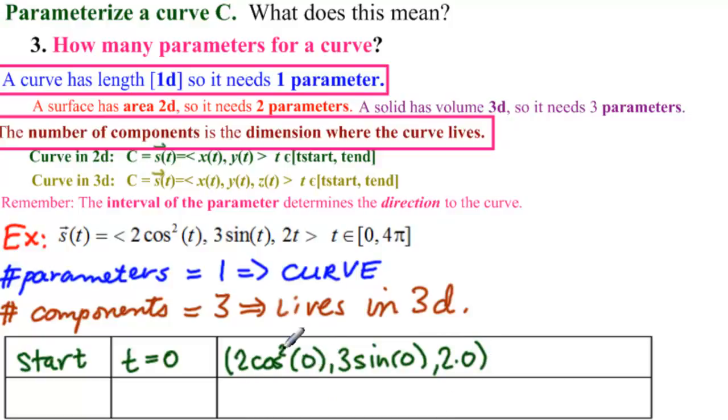So this is two times one, two. Sine of zero is zero, and two times zero is zero. So our start point is at (2, 0, 0).